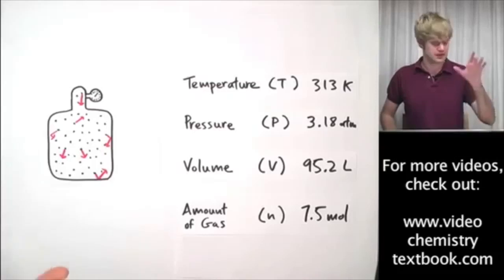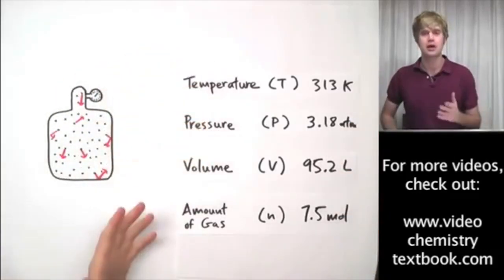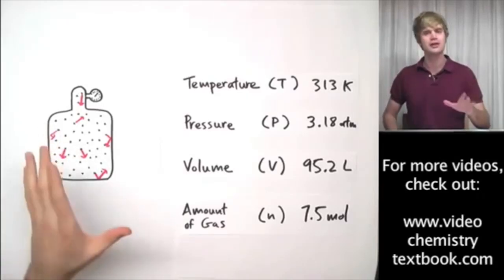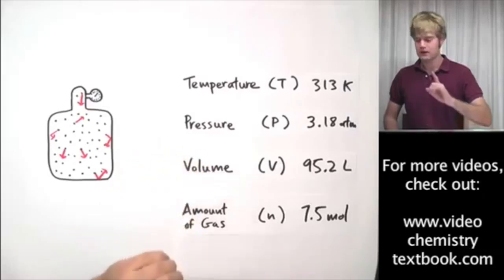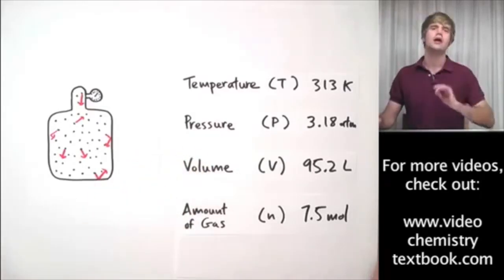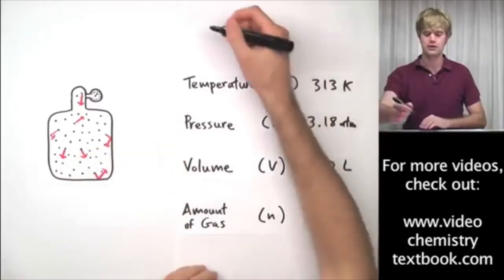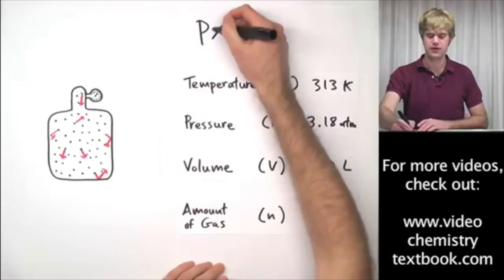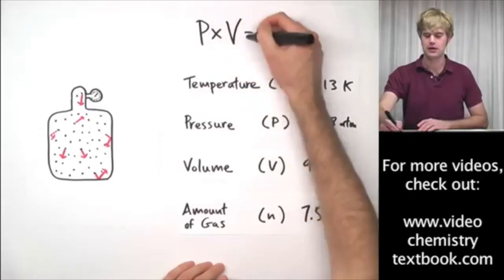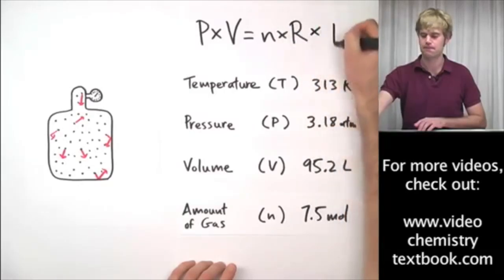Now, whenever we have a sample of gas like this, you know, if it's a tank or it's in a balloon or wherever it is, we can describe, we can give it these various characteristics. And it turns out that also for any sample of gas, if we know three of these characteristics, we can figure out what the fourth is. All we need to do is know three. And in order to do that, we use an equation that's a representation of the ideal gas law. And it's written as P times V, pressure times volume, equals N, the amount of gas, times R, times T, temperature.